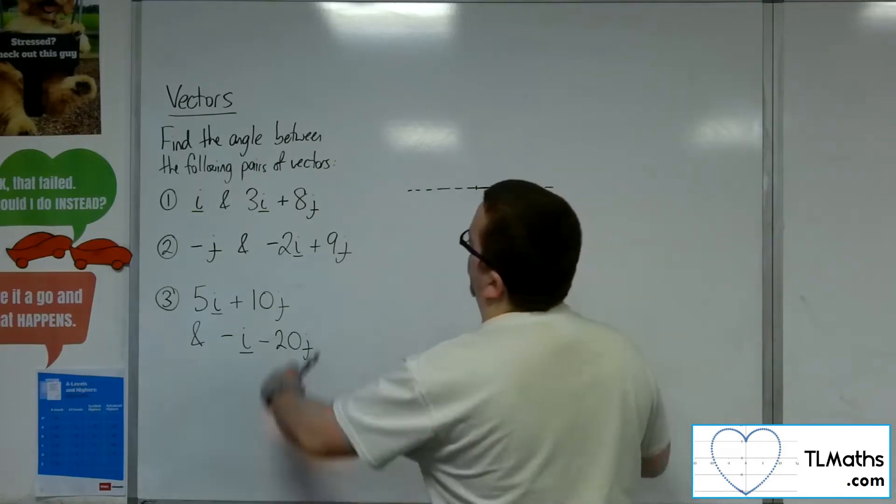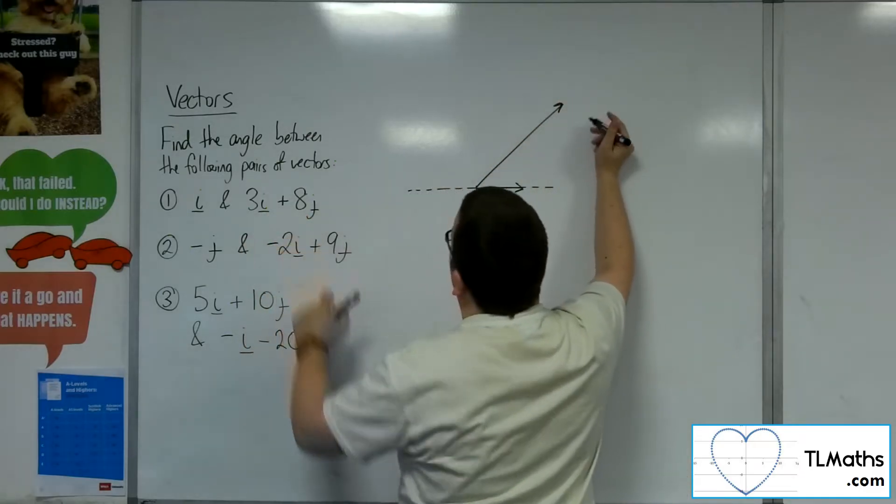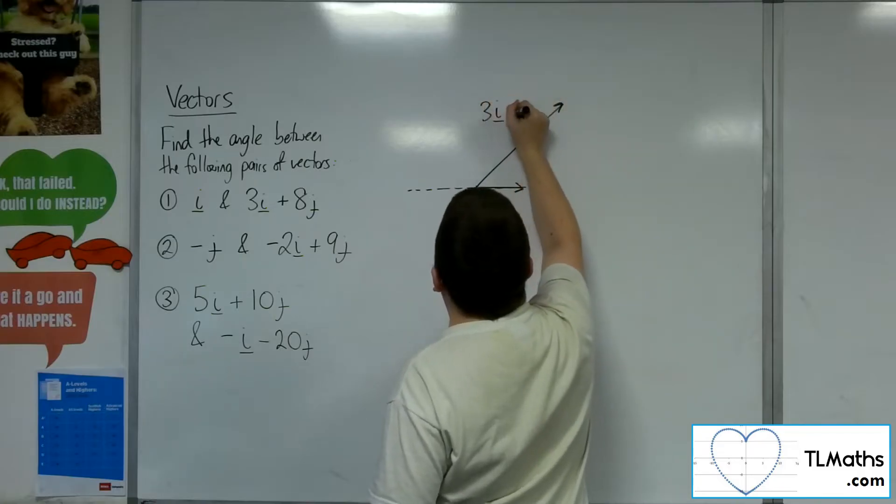And then I've got this other vector, so it's 3 along and 8 up. So some other vector, something like that, and this is 3i plus 8j.